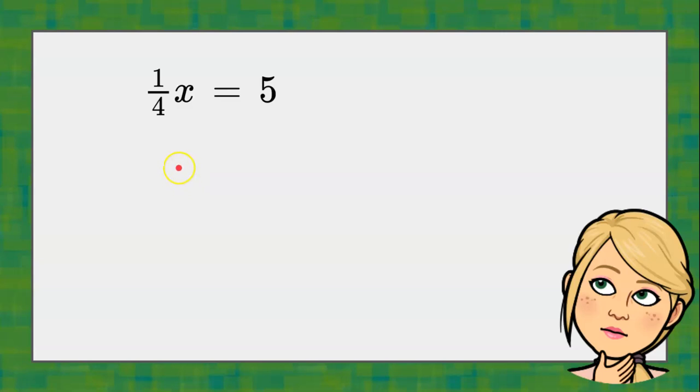Hello, let's solve the one-step equation 1/4 x equals 5. So first I want to identify what is happening to my variable x, and it is being multiplied by 1 over 4, or 1/4.